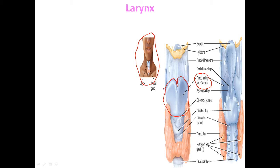Down below the thyroid cartilage, you see this little strip of cartilage shaped like a U — that is the cricoid cartilage. So you have your thyroid cartilage on top that makes up your Adam's apple, and then below it you have your cricoid cartilage. These make up the front of your larynx.